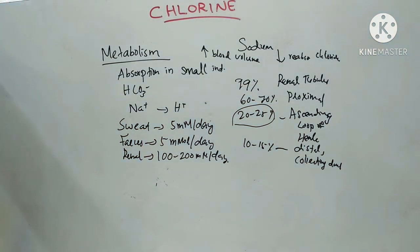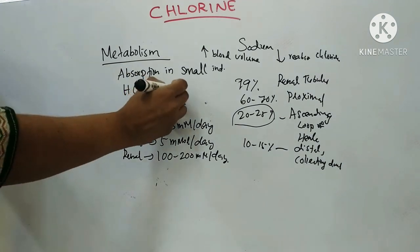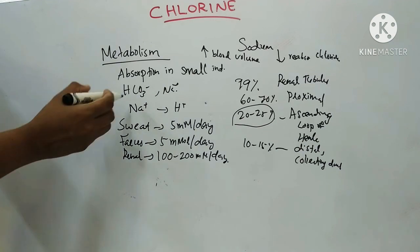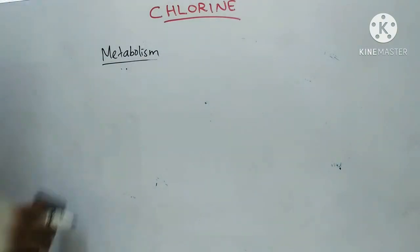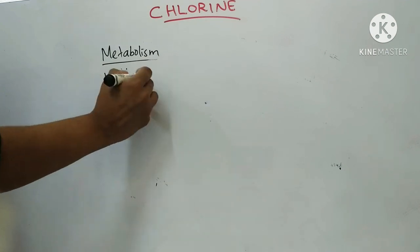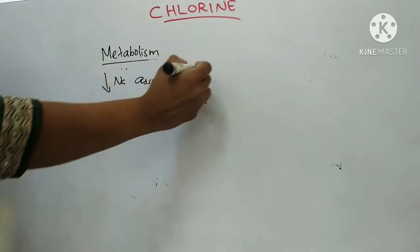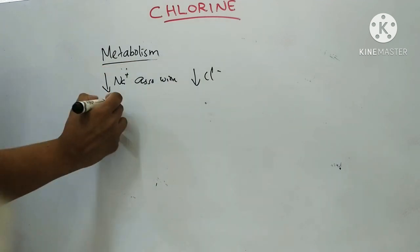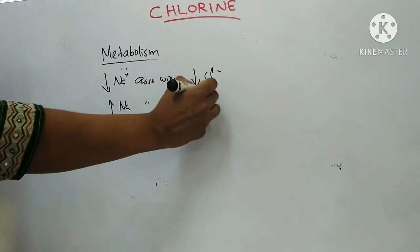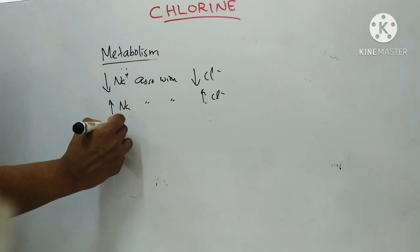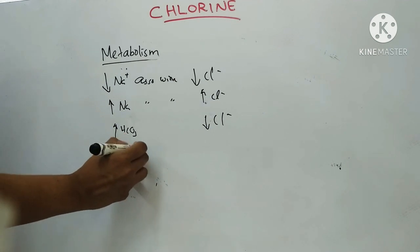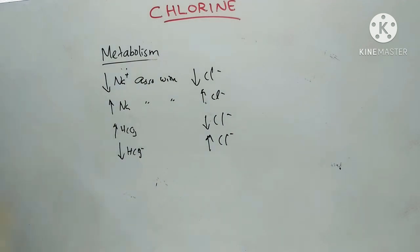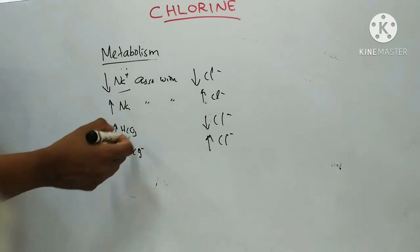Plasma levels of chloride depend on the plasma concentration of sodium and bicarbonate. Decreased sodium is associated with decreased chloride. However, increased bicarbonate is associated with decreased chloride, and decreased bicarbonate is associated with increased chloride.